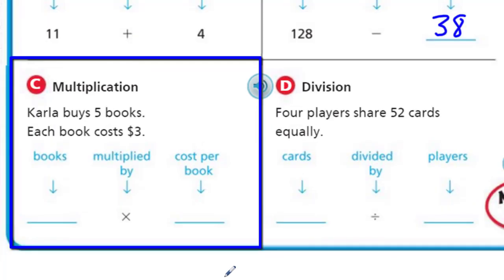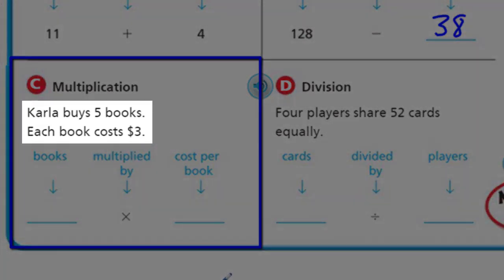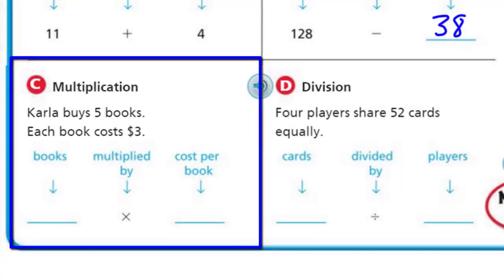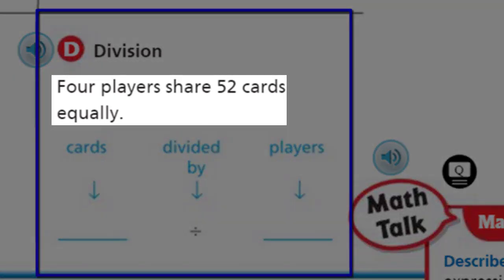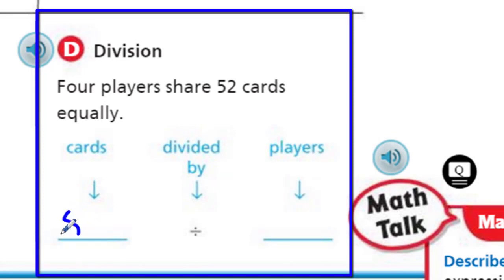For C, we have multiplication. Carla buys 5 books and each book costs $3. We have our 5 books, and because we're using the words 'each book costs $3,' we multiply. So the expression is 5 times 3. For D, we have division. 4 players share 52 cards equally. The 52 cards are our dividend, our whole amount, and they're shared equally among 4 players. So the expression is 52 divided by 4.